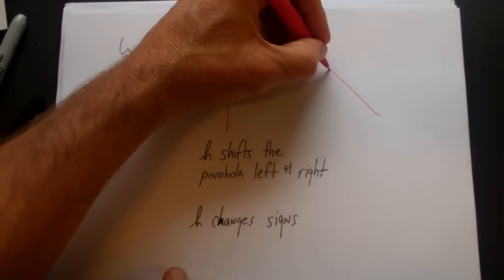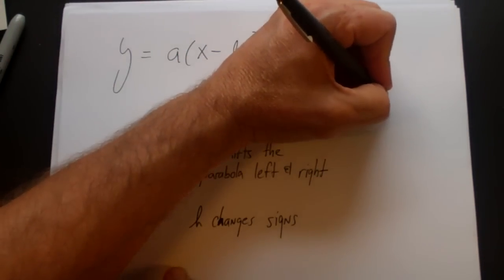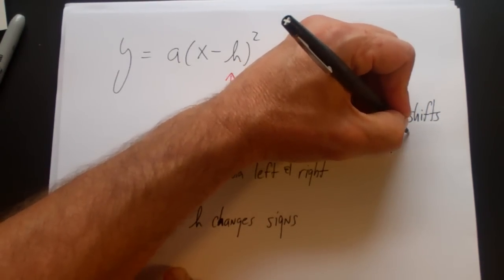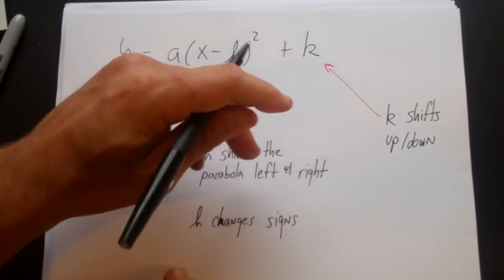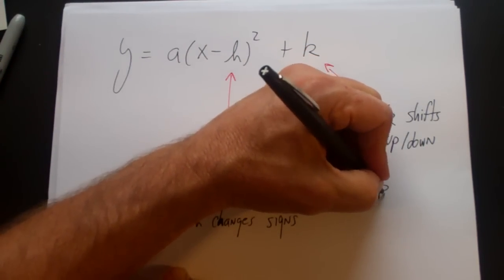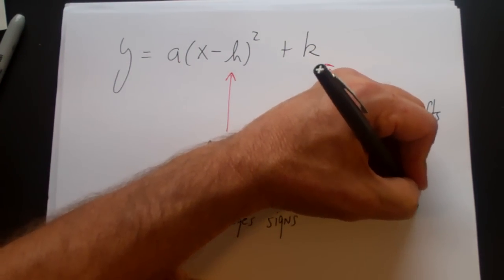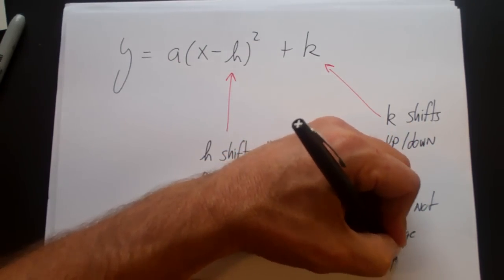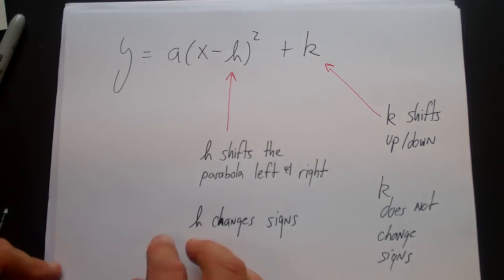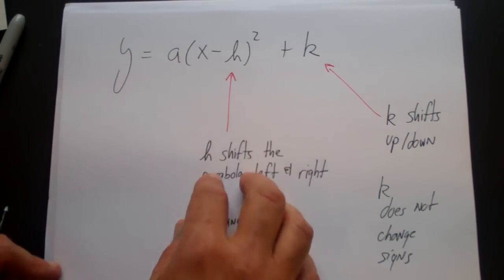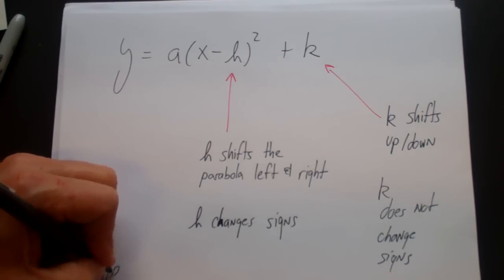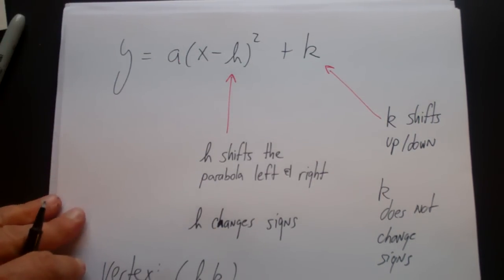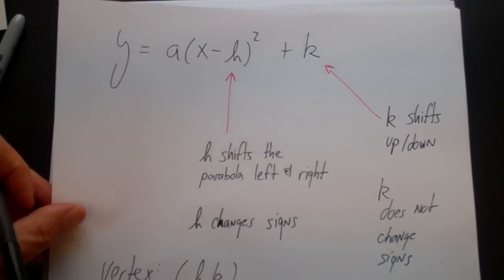The k shifts the parabola up and down. What's interesting about k is that, unlike h, k does not change signs. So h and k simply move the parabola left and right and up and down, and the vertex of a parabola will always simply be (h, k).